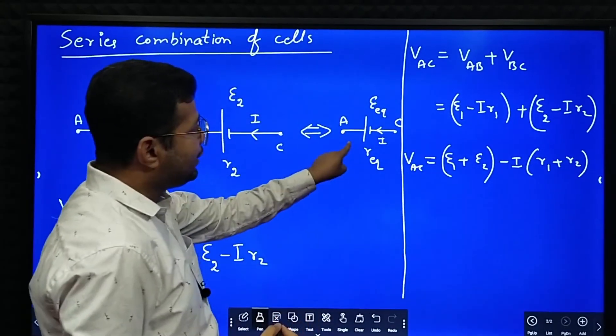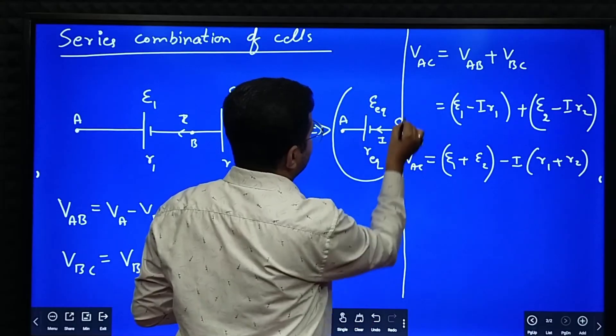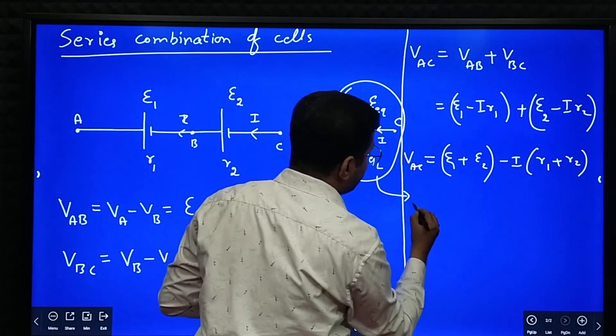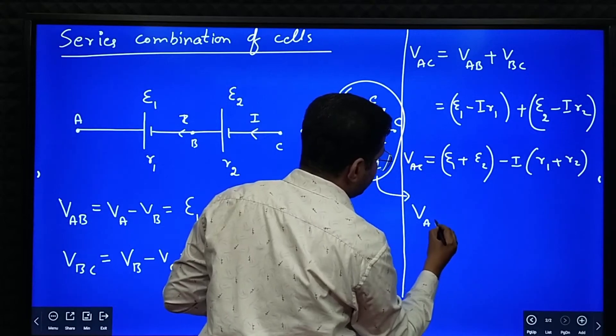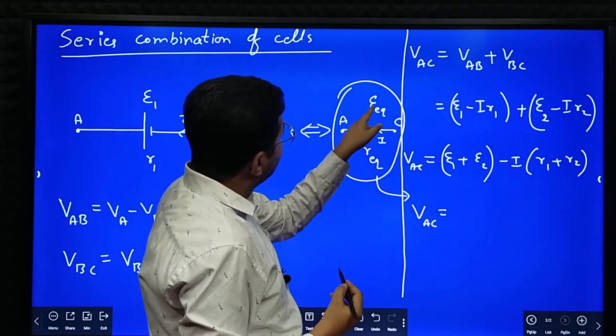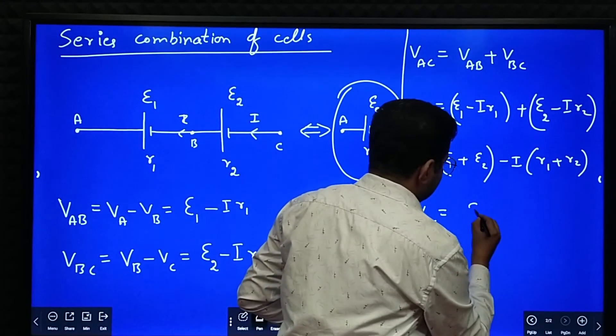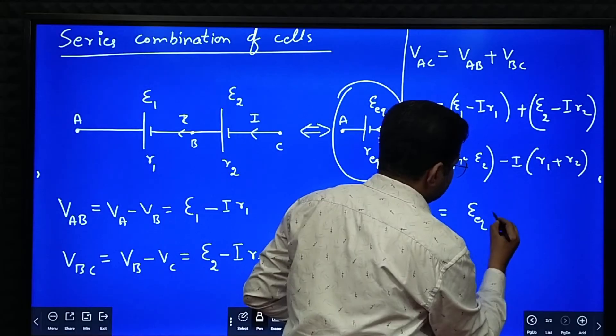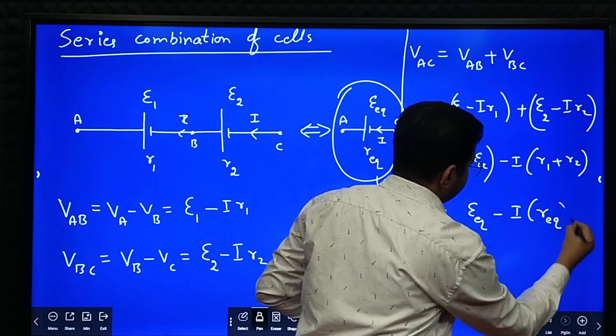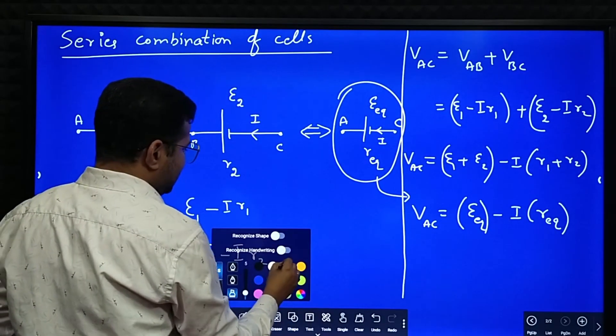Now if you look at this equation, if you look at this circuit, we can write an equation. What is that equation? VAC is also equal to E equivalent minus I into R equivalent.